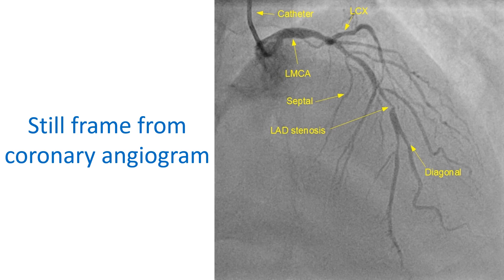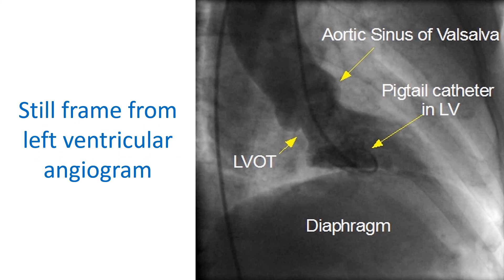Angiography is done by injecting radio contrast medications into the blood vessels or chambers and taking continuous x-ray imaging — CINE runs. One of the commonest forms is coronary angiography, the visualization of blood vessels of the heart, used to detect blocks and assess their location and severity. Visualization of the lower chambers by injecting radio contrast is known as ventriculography. An angiogram of the aorta is known as an aortogram, and blood vessels of the lungs are seen on a pulmonary angiogram.